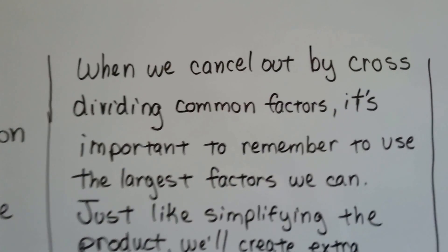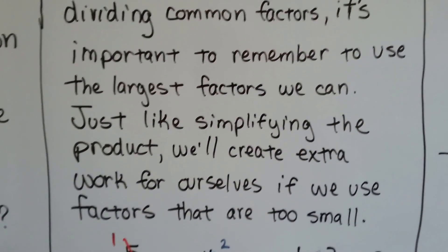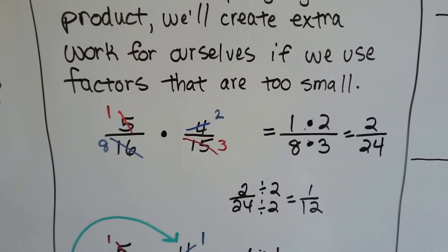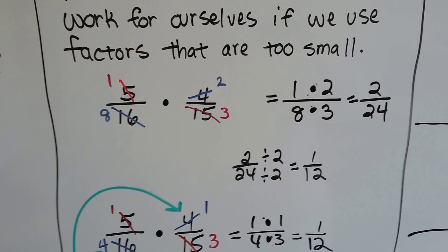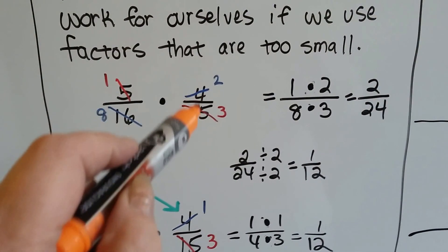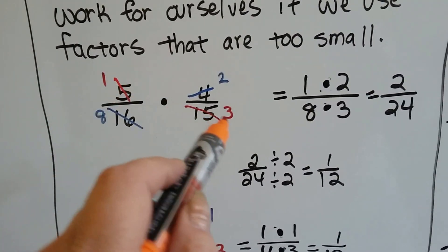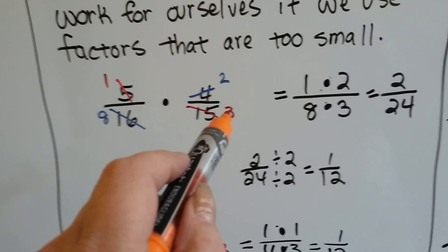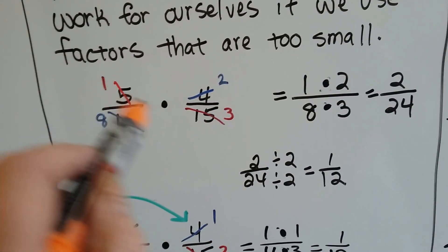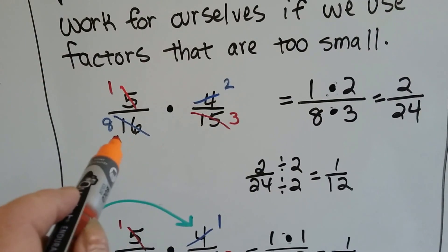When we cancel out by cross-dividing common factors, it's important to remember to use the largest factors we can. Just like simplifying the product, we'll create extra work for ourselves if we use factors that are too small. If we have five-sixteenths times four-fifteenths, and we cancel the five out with the fifteen, because five goes into fifteen three times, that becomes a one and that becomes a three.